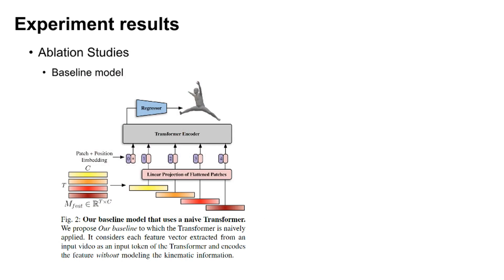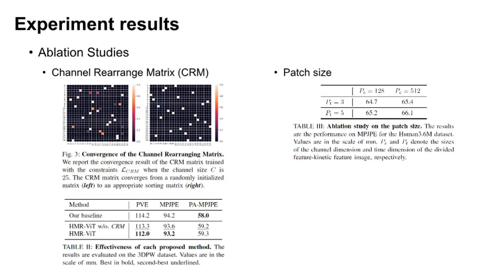To verify the effectiveness of each proposed component, we compare the proposed method with our baseline, as shown in Figure 2, to which the transformer is naively applied. Table 2 shows the results. Our method shows better performance than the baseline, and there is additional performance improvement when the CRM matrix is applied. This verifies that constructing a temporal kinematic feature image and using it as an image input of Vision Transformer is an effective method. As shown in Figure 3, the CRM matrix converges to an appropriate sorting matrix.